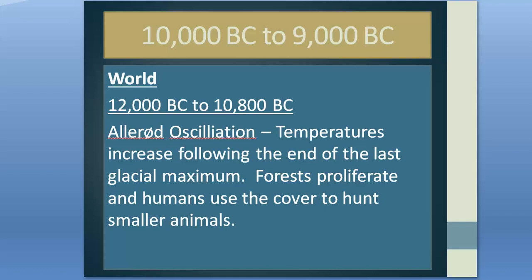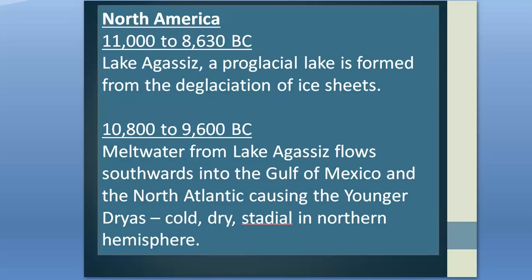The warm interstadial period only lasted for 1,800 years before events in North America would have a drastic effect on the climate of the northern hemisphere. Since 28,000 BC, North America had been covered with a vast ice sheet during a period known as the Wisconsin Glaciation. As the ice sheet began to retreat northwards due to warmer temperatures, it created a vast proglacial lake known as Lake Agassiz.